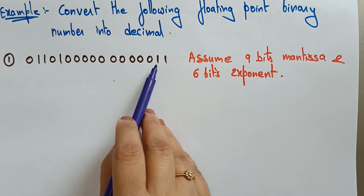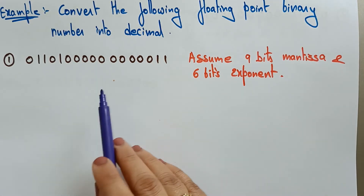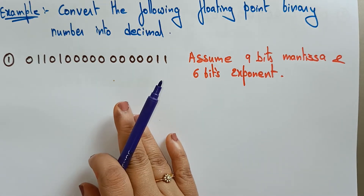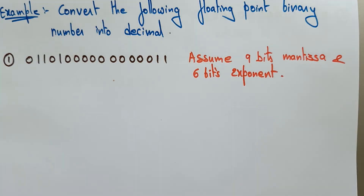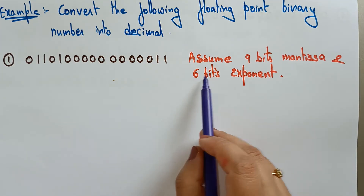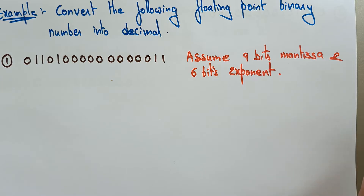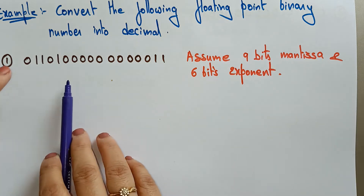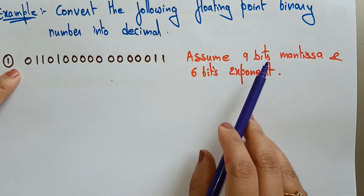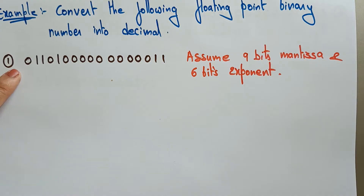They have given a binary number and stated that it is a floating point number. To convert a floating point number into decimal, certain conditions must be mentioned — the size of the mantissa and the size of the exponent. Here, we are told to assume nine bits as mantissa and six bits as exponent.